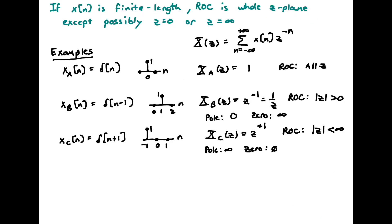Now let's look at finite length sequences. If a sequence X of n is finite length, then the region of convergence is going to be the whole Z-plane, except possibly Z equals zero or Z equals infinity. Our first example is XA of n equals delta of n — a single delta function at the origin. Plugging into the Z-transform equation, we get XA of Z equal to 1, because there's only one non-zero term. That converges everywhere, so the region of convergence is all Z.